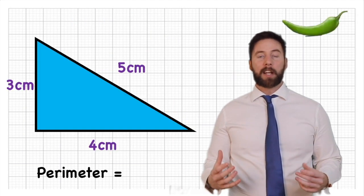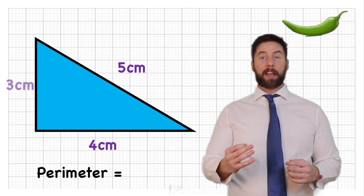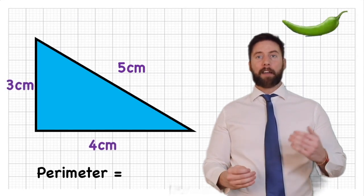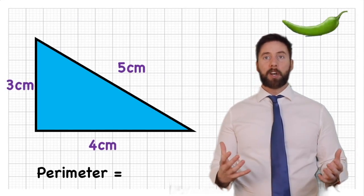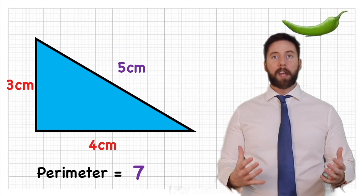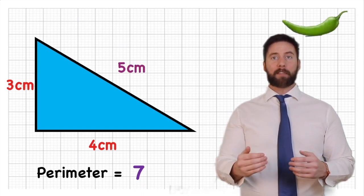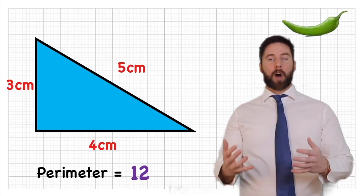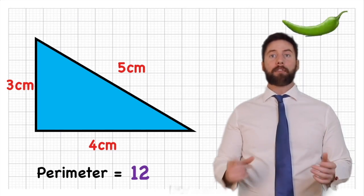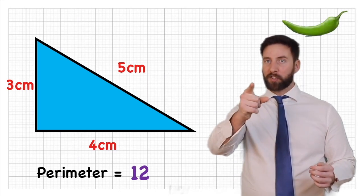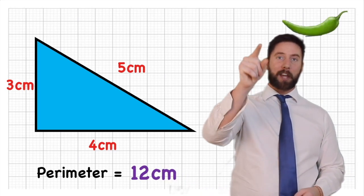Let's look at a triangle with sides of 3, 4, and 5 centimetres. To find the perimeter, I add 3 + 4, which gives me 7, then add 5, which gives me 12. So the perimeter of this triangle is 12 centimetres. Very important to make sure we use that unit.